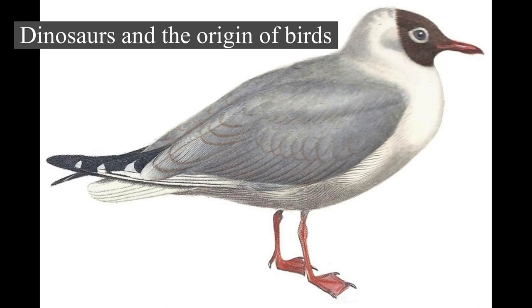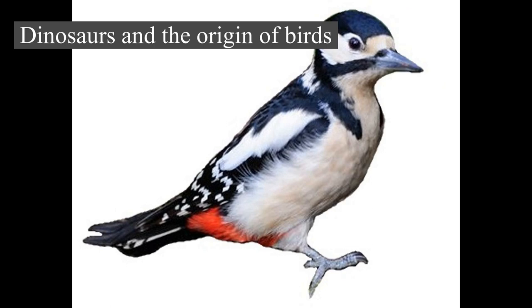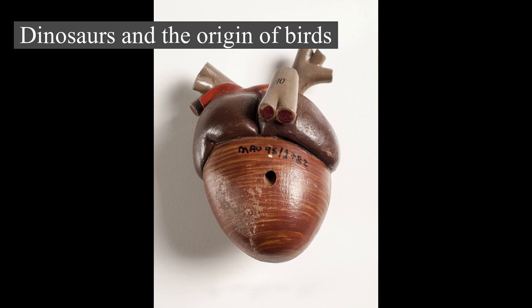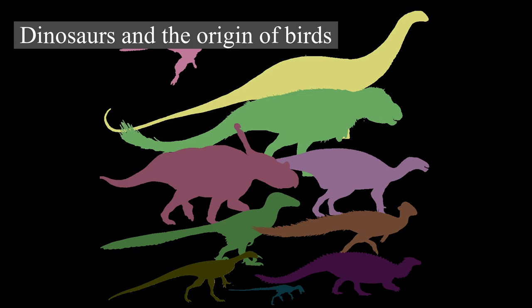The consensus view in contemporary paleontology is that the flying theropods, or avialans, are the closest relatives of the deinonychosaurs, which include dromaeosaurids and troodontids. Together, these form a group called Paraves. Some basal members of Deinonychosauria, such as Microraptor, have features which may have enabled them to glide or fly. The most basal deinonychosaurs were very small. This evidence raises the possibility that the ancestor of all Paraves may have been arboreal, able to glide, or both. Unlike Archaeopteryx and the non-avialan feathered dinosaurs who primarily ate meat, recent studies suggest that the first avialans were omnivores.